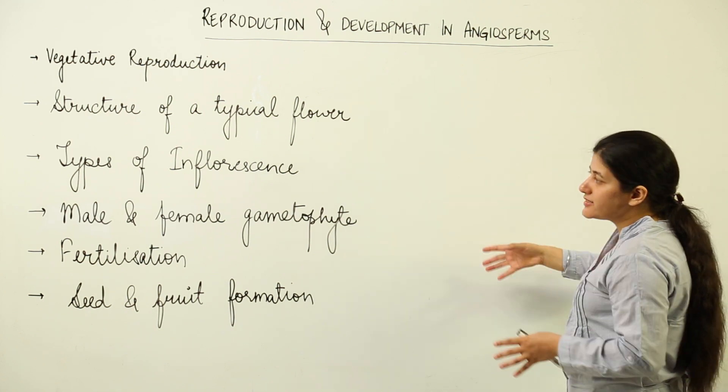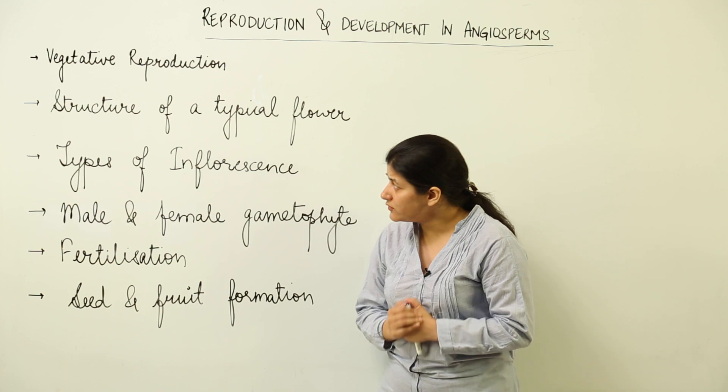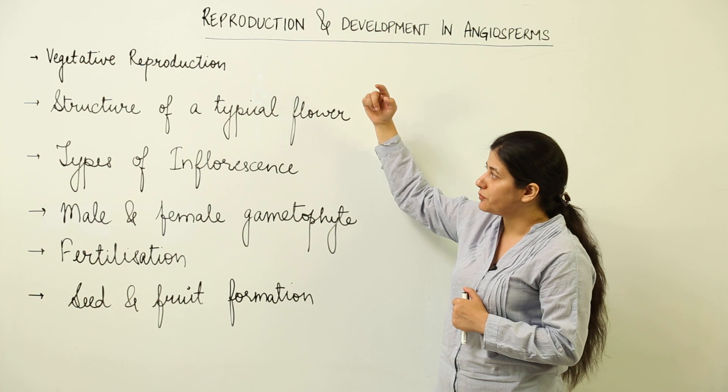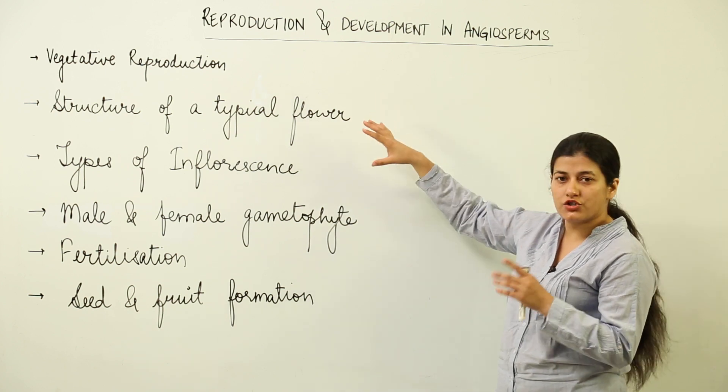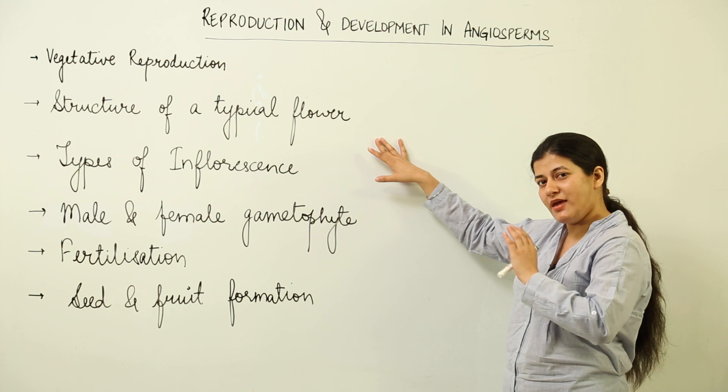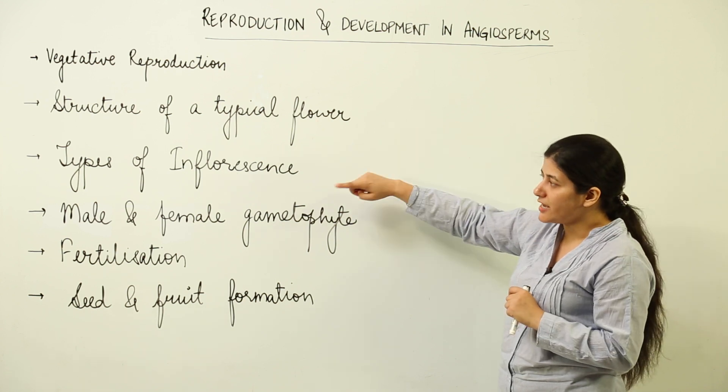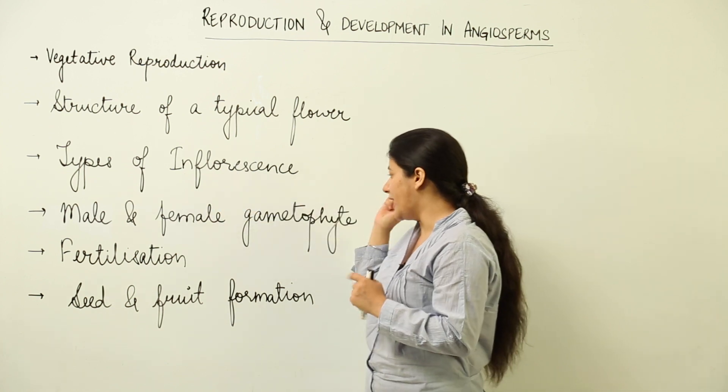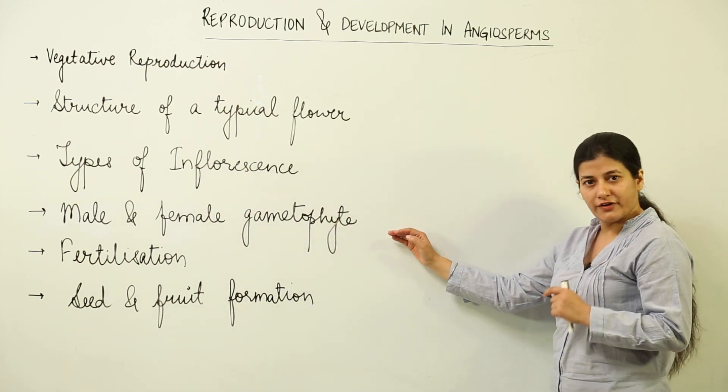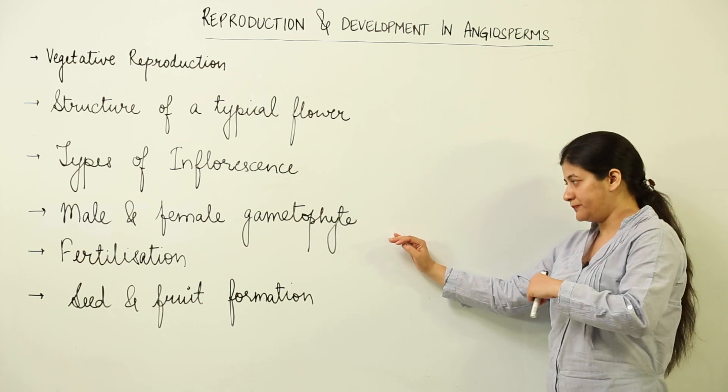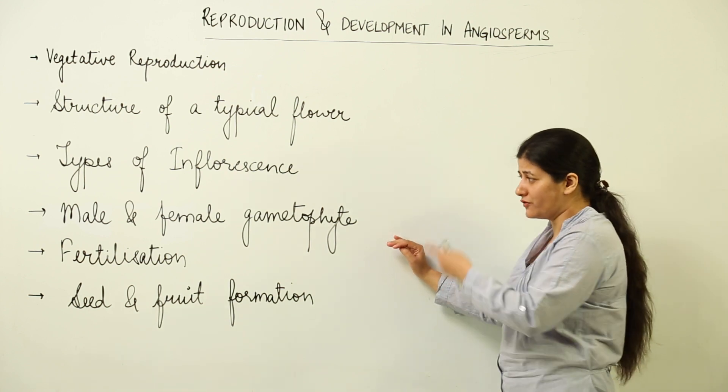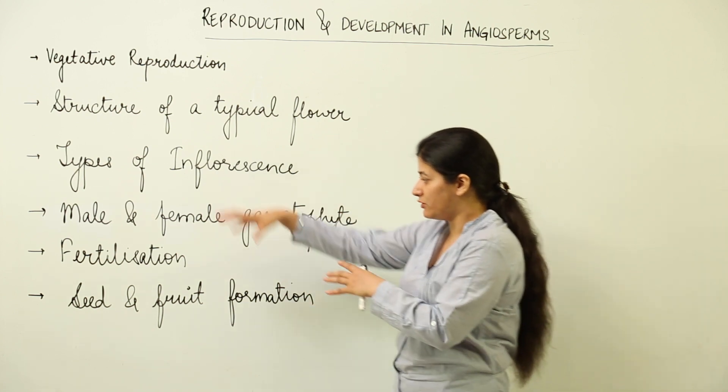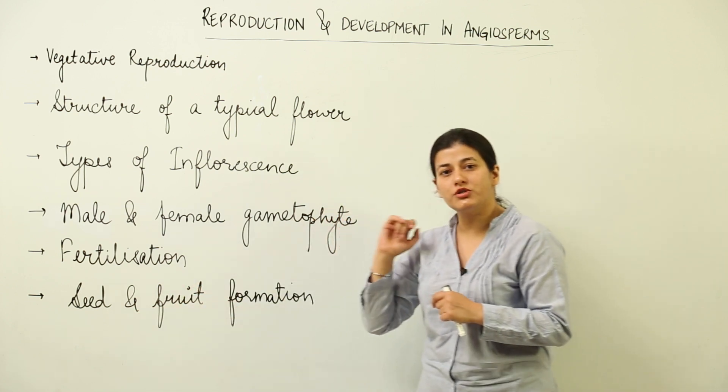The topic here is reproduction and development in angiosperms, or interchangeably, in flowering plants. The topics that we are going to study in this chapter are listed over here. First is vegetative reproduction, second is the structure of a typical flower which contains both male and female parts, types of inflorescence, male and female gametophyte, fertilization, and last topic is the outcome of this entire process—seed and fruit formation.